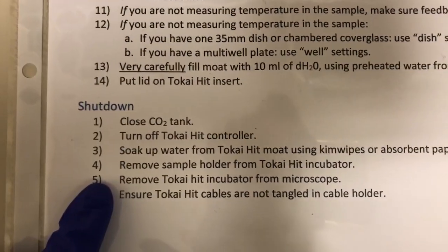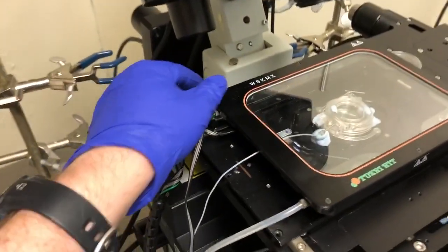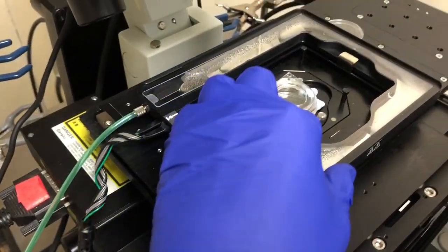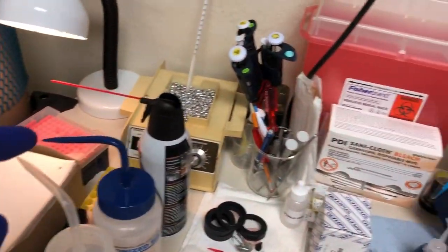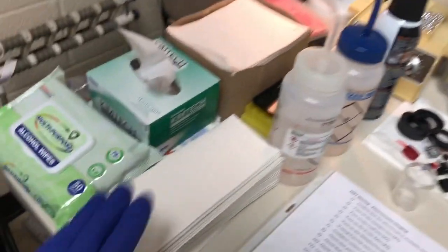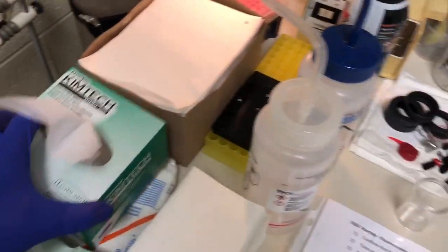We're going to soak up water from the Tokai Hit moat using kimwipes or absorbent paper. So this is an important step. We're going to lift this lid off, remove this, and then you really want to soak up all that water before you move anything. We have either kimwipes or absorbent paper here or here. So I'll do that off camera.